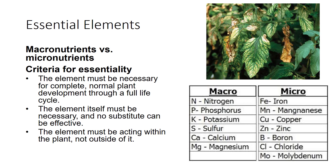Components that are necessary for plant growth are called essential elements. Essential elements are classified based on their need by the plant. Macroessential elements, or macronutrients, are needed in large quantities. Microessential elements are required in low concentrations. The three criteria to be considered an essential element include: the element must be necessary for complete, normal plant development through a full life cycle; the element itself must be necessary and no substitute can be effective; and the element must be acting within the plant, not outside of it.